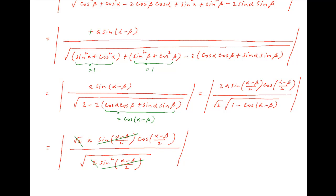The denominator equals √2 times sin((α minus β)/2), and √2·sin((α minus β)/2) cancels across the numerator and the denominator, giving the final result.